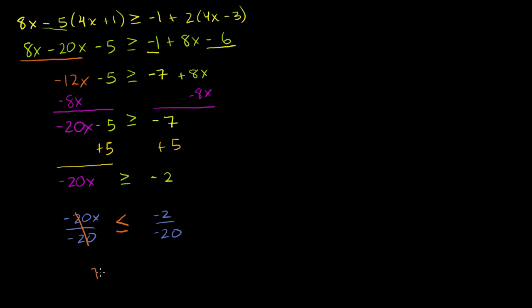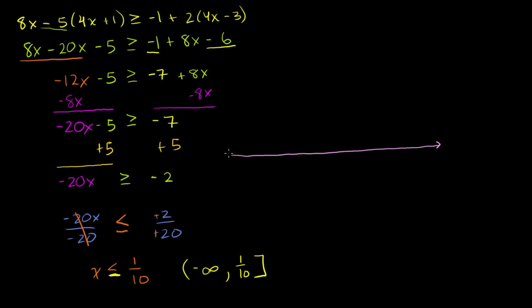The negative 20's cancel out and you get x is less than or equal to 2 over 20, which is 1 over 10. In interval notation, the upper bound is 1 over 10 — and notice we're including it because we have a less than or equal sign — going all the way down to negative infinity. On the number line: 0 is here, 1 is here, and 1 over 10 is in between. Everything less than or equal to 1 over 10 is included in the solution set. You can try any value less than 1 over 10 and verify it satisfies the inequality.